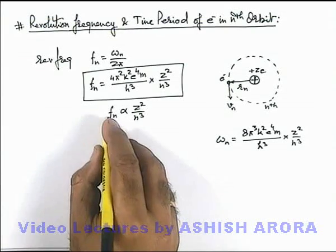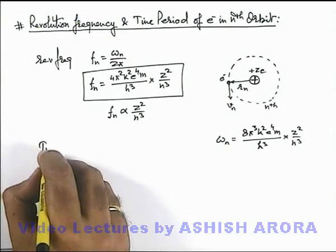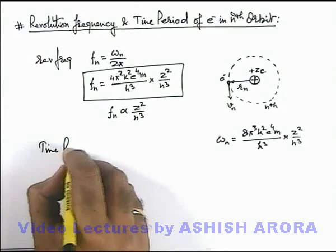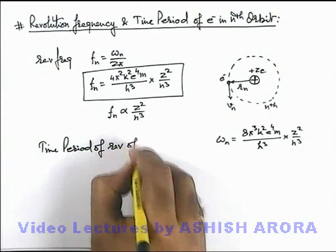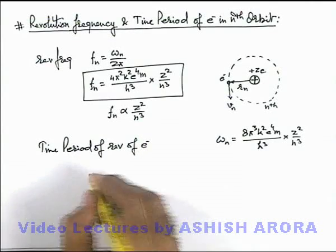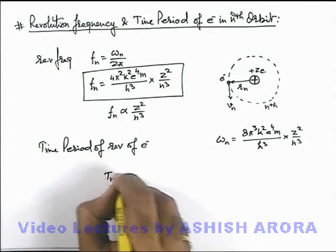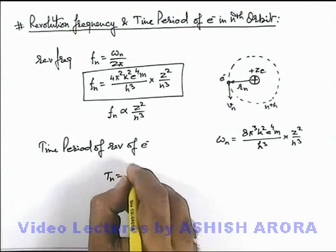And if we know the revolution frequency we can directly write the time period of revolution of electron in its orbit, in the n-th orbit. This we can write as T_n which is the reciprocal of revolution frequency.